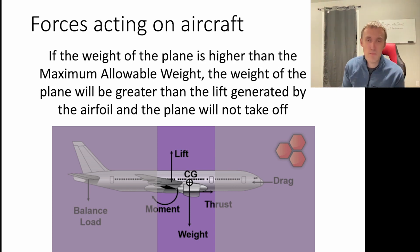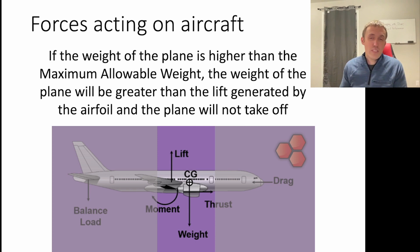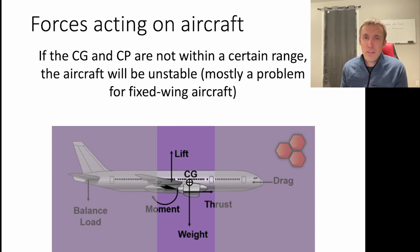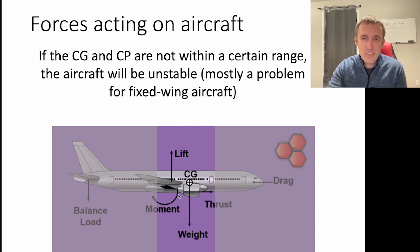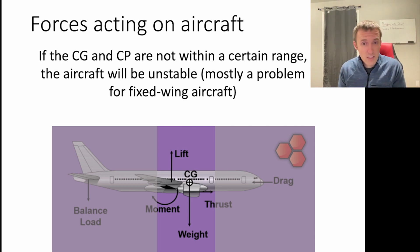If the weight of the plane is higher than the maximum allowable weight, it means the lift generated by the airfoil will be too low to counteract that weight, and the plane won't even be able to take off — which would result in a crash. If the center of gravity and the center of pressure are not within a certain range of each other, the aircraft will also be very unstable. This is mostly an issue for fixed-wing aircraft, where if the CG is too far forward or backward from the center of lift, the aircraft is very unstable. But this can also happen with copter-type drones — if the payload is off to one side, the aircraft may be very unstable and could crash immediately.